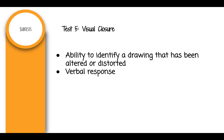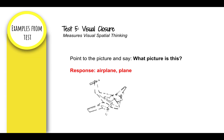Test 5: Visual Closure. This subtest measures the ability to identify a drawing that has been altered or distorted. A verbal response is required. Point to the picture and say, 'What picture is this?' The student receives a distorted picture. An appropriate response for the picture shown would be 'airplane' or 'plane.' This test measures visual-spatial thinking.